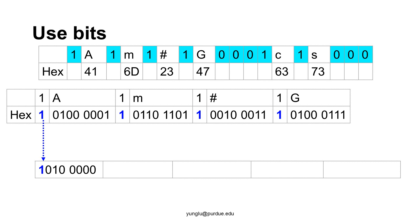This control bit is followed by character A. Character A is 41 in hexadecimal: 0, 1, 0, 0, 0, 0, 0, 1. The control bit 1 already uses 1 bit, thus only 7 bits are available in this byte. The next 7 bits come from the first 7 bits of character A. The last bit of A has to be moved to the next byte. The first byte is 1, 0, 1, 0, 0, 0, 0, 0. The second byte starts with 1, which is the last bit from character A.